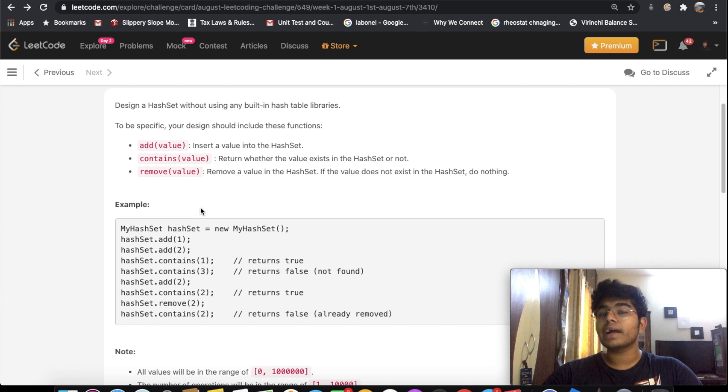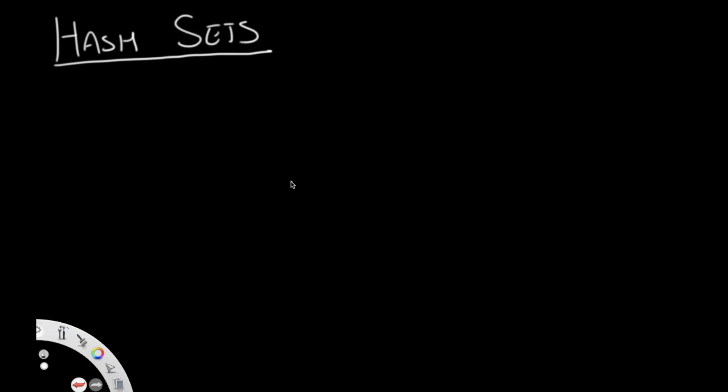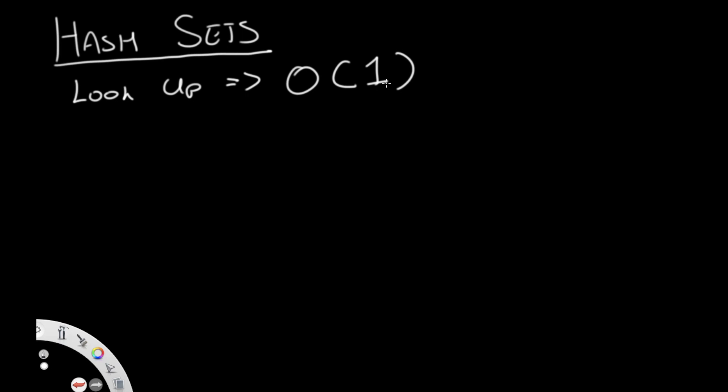Let's start off with what even is a hash set and why would you want to use one. A hash set is a set-based data structure which stores values. What's different about a hash set compared to a list or a set is the lookup time — the time it takes to find a certain element is constant time, O(1). A list would have a lookup time of O(n), but a hash set does it in O(1) constant time, which is really fast.